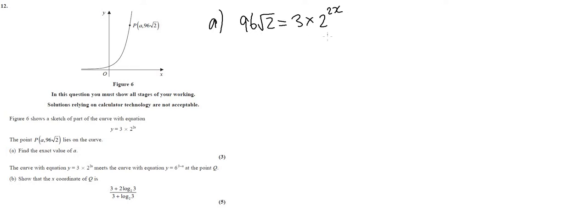The first thing we can do is divide through by three. That gives us 32 times the square root of two equals two to the power of two x, which makes it a little bit simpler. Now, 32 times the square root of two — this is actually expressible as a power of two. So 32 is two to the power of five.